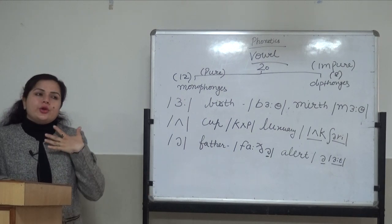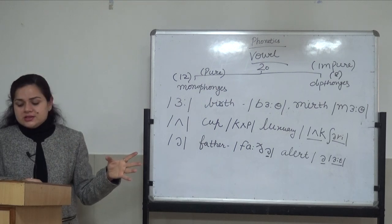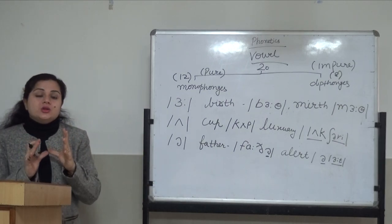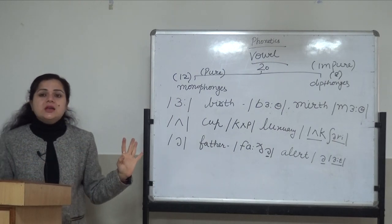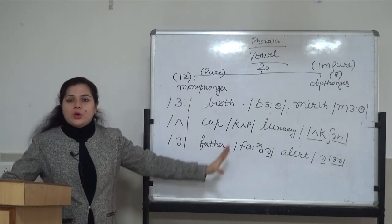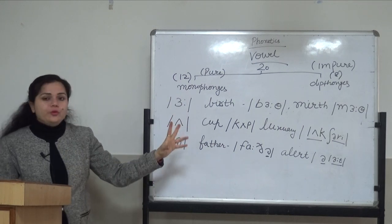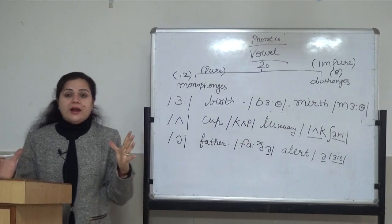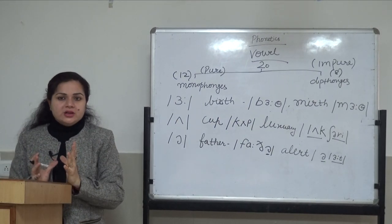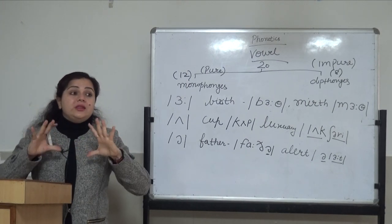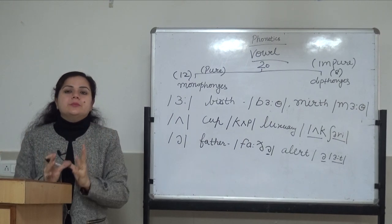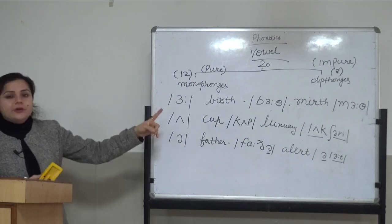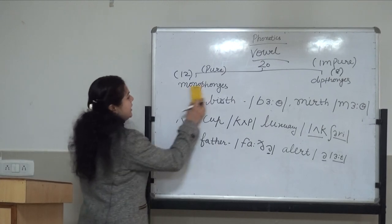Transcription needs a lot of practice, time, and dedication to learn all these things. Sometimes it is very difficult to get all the knowledge on one platform, so I have tried to compile things for you so that you feel more confident. Now the last thing: these were all 12 pure vowel symbols — the monophthongs. Now I am moving towards the last portion of my lecture, that is diphthong — 8 symbols, also called impure vowels.